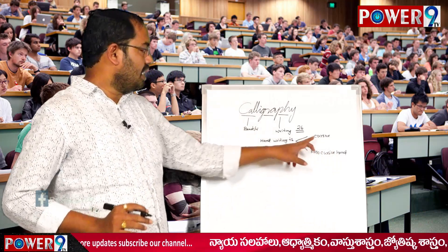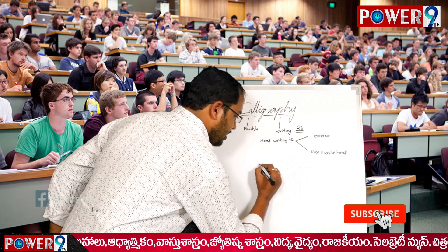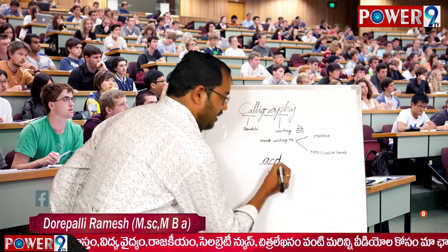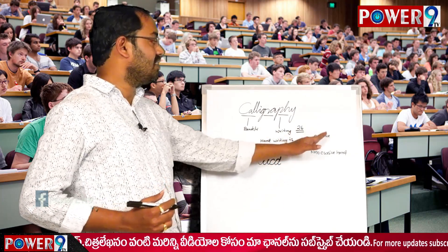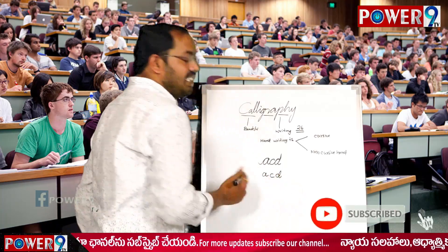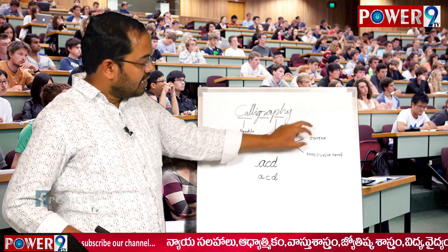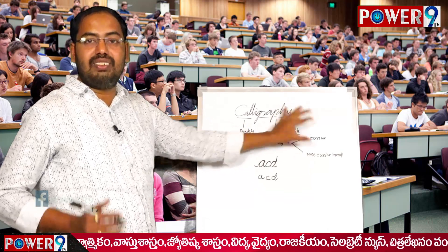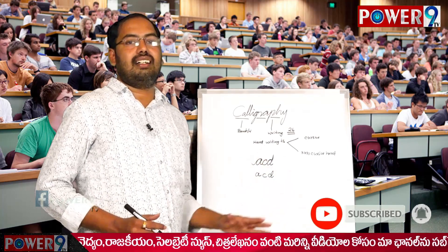In cursive handwriting, we make connections between letters. For example, writing C and D connected is cursive. If we write C and D separately without connection, that is non-cursive handwriting. If we maintain the connection between letters it is cursive; if not connected, it is non-cursive.